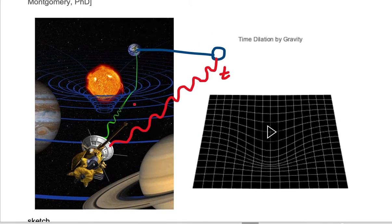As shown in this sketch, we have Earth that's on the opposite side of the solar system compared to the Cassini space probe.